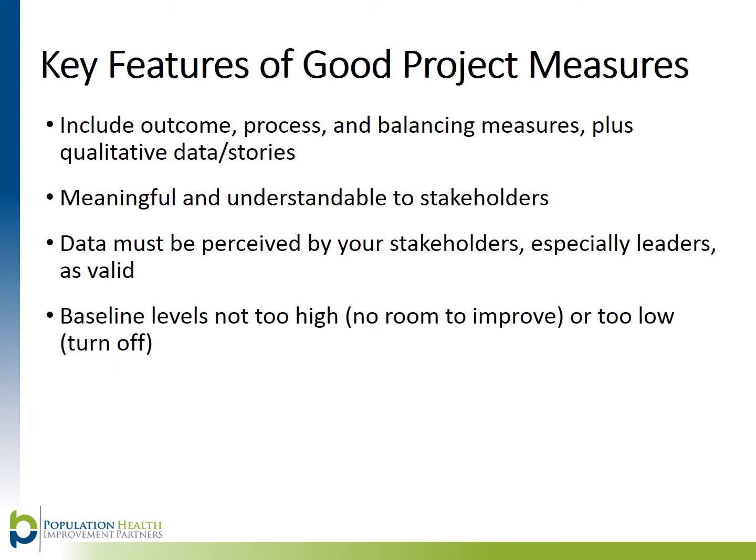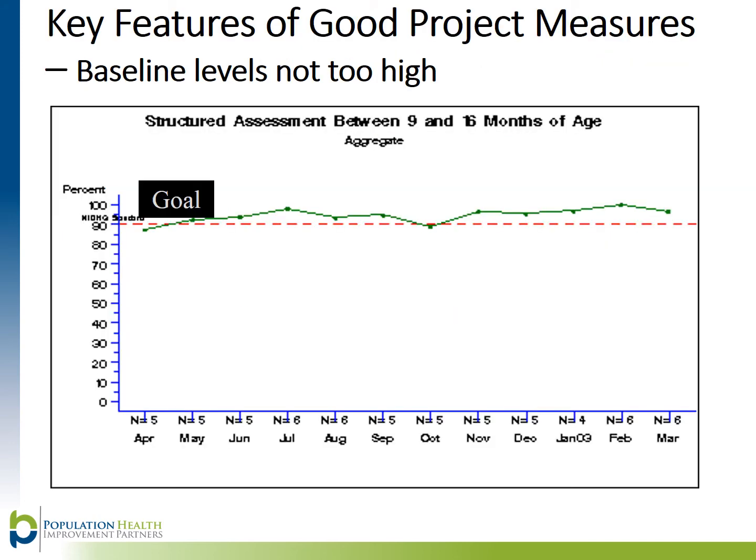When defining measures, make sure your operational definitions don't give you baseline levels that are too high or too low. If the measure is defined in a way that the baseline is very high, there will be little room to assess improvement. If the measure is too low, then it can be too negative and unappealing to stakeholders. As you can see from the graph, the baseline measures already meet the goal line — there would be no way to show an improvement. Therefore, this would not be an appropriate measure to show progress.